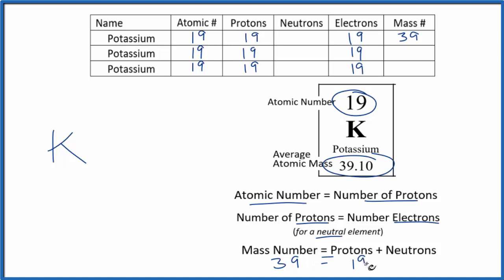We have 19 protons. So that means we have to have 20 neutrons. So 20 neutrons for this isotope of potassium. And we name it based on the mass number, potassium 39.